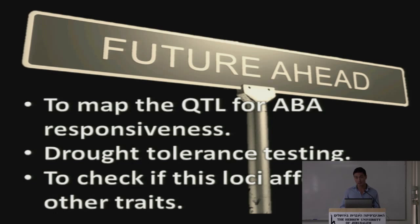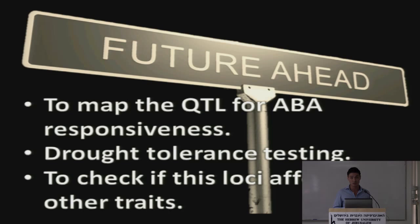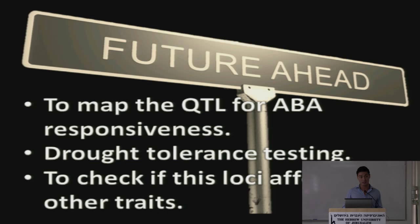That's where my work stopped — I didn't have time to continue further. But the future work would be: first, to map the QTL for ABA responsiveness on our population; then to do drought tolerance testing; and also to check if this locus affects other traits. It may be very positive from sowing to emergence, but what if it affects yield or other important traits? That must also be checked.